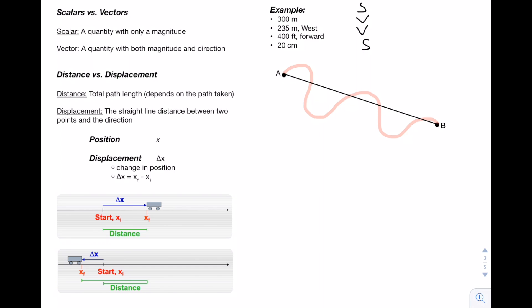In the second example, the cart starts moving, then changes direction and moves back towards the left. In this case, our distance is the path length shown in green on the picture. And our displacement is going to be the distance between the initial and final position — so our delta x, our displacement, is shown in red, and our distance traveled is in black.